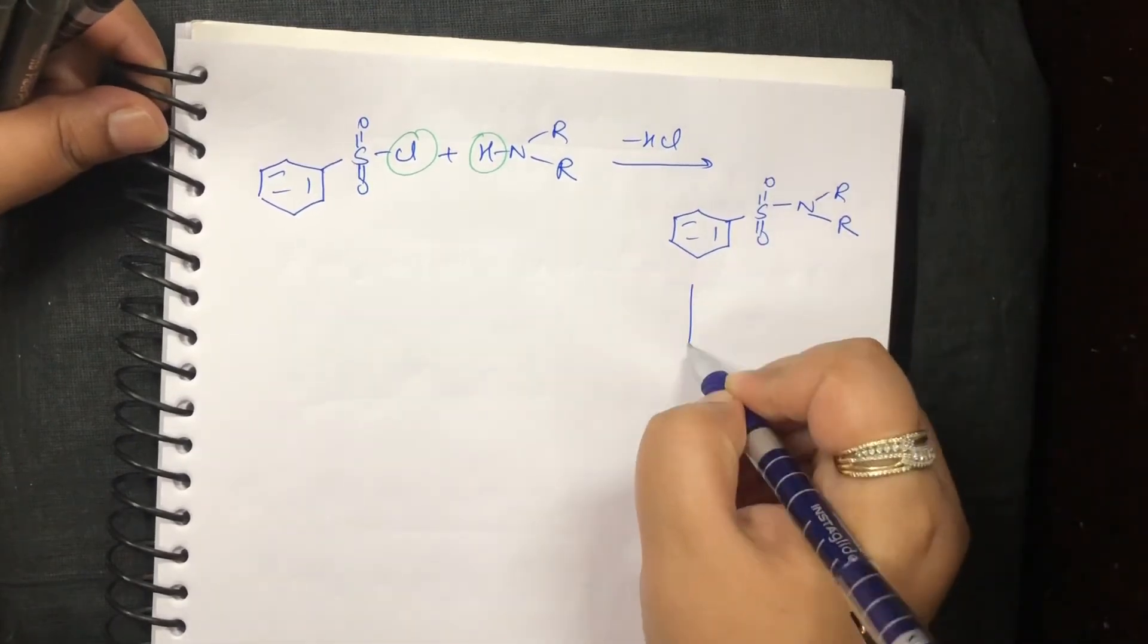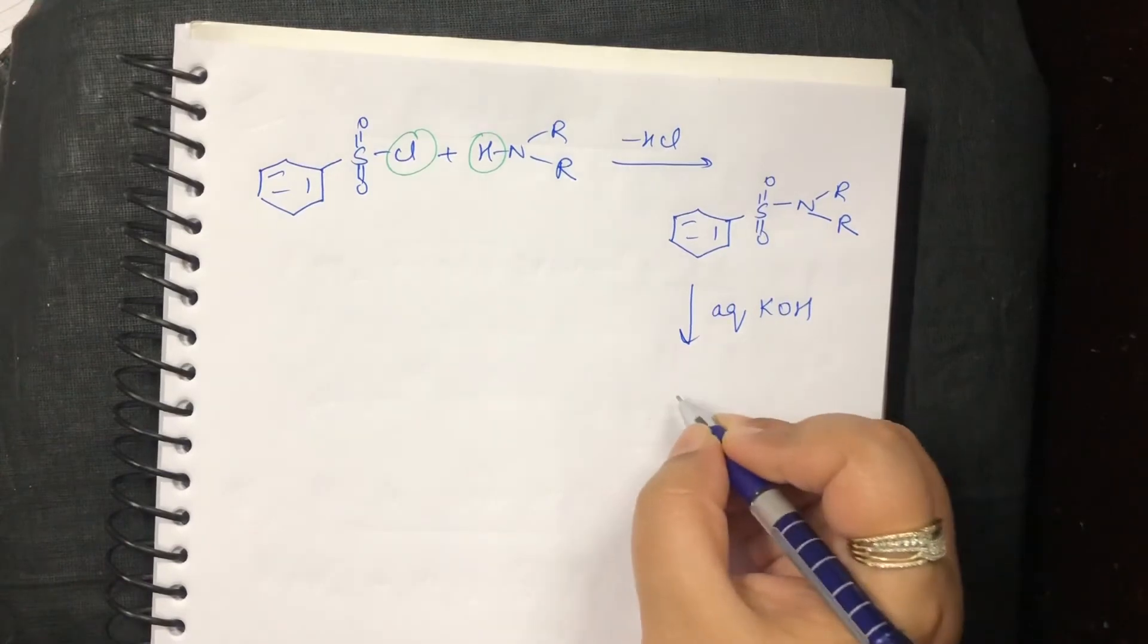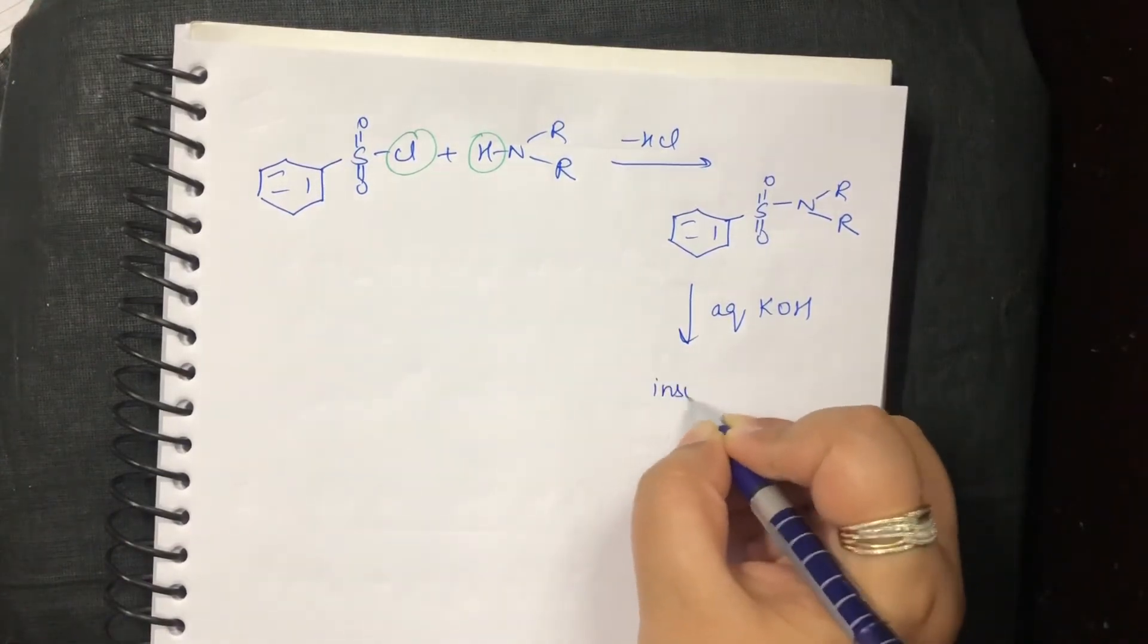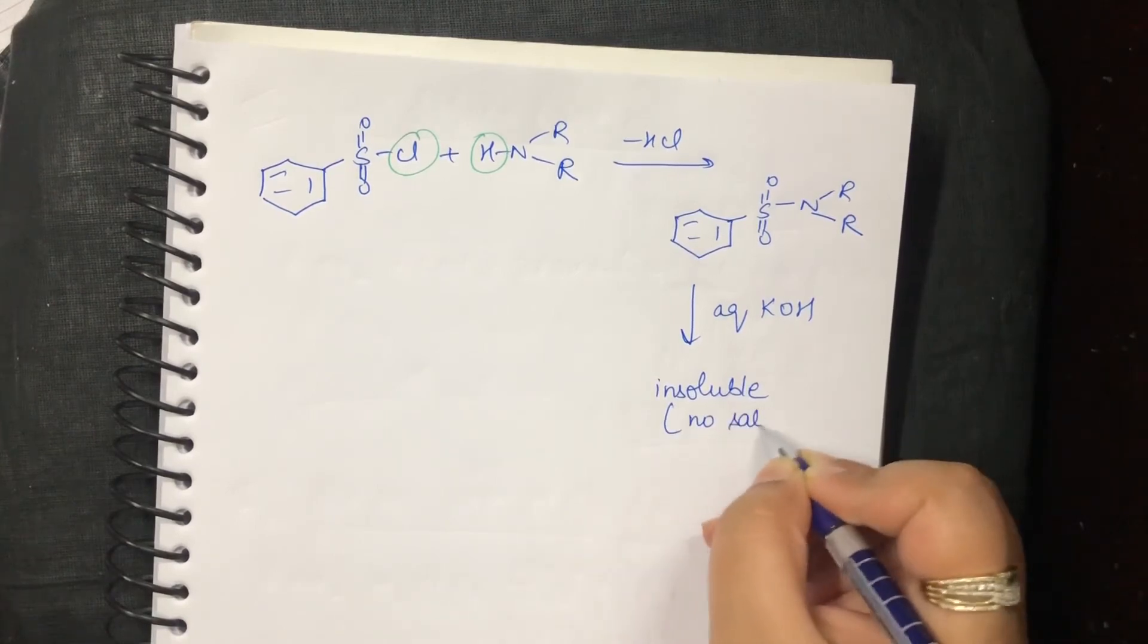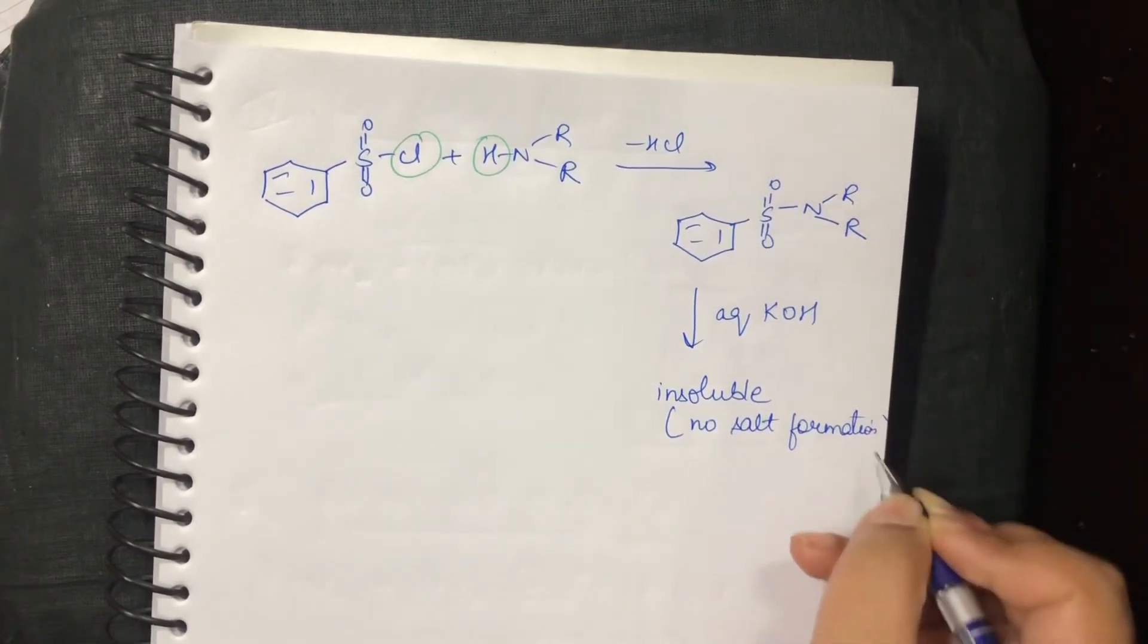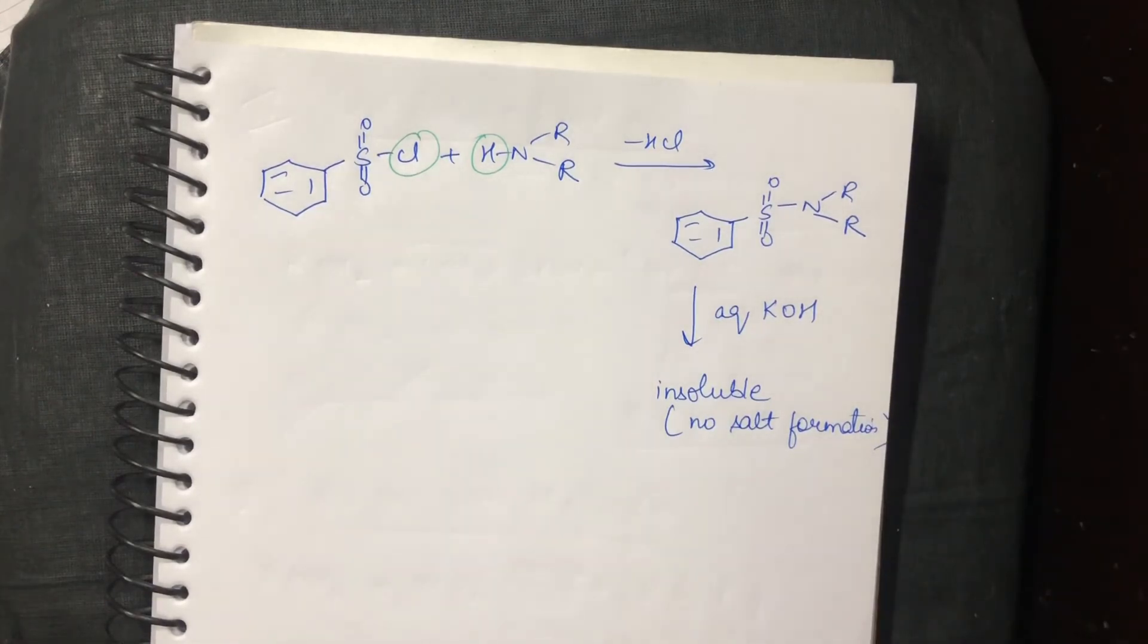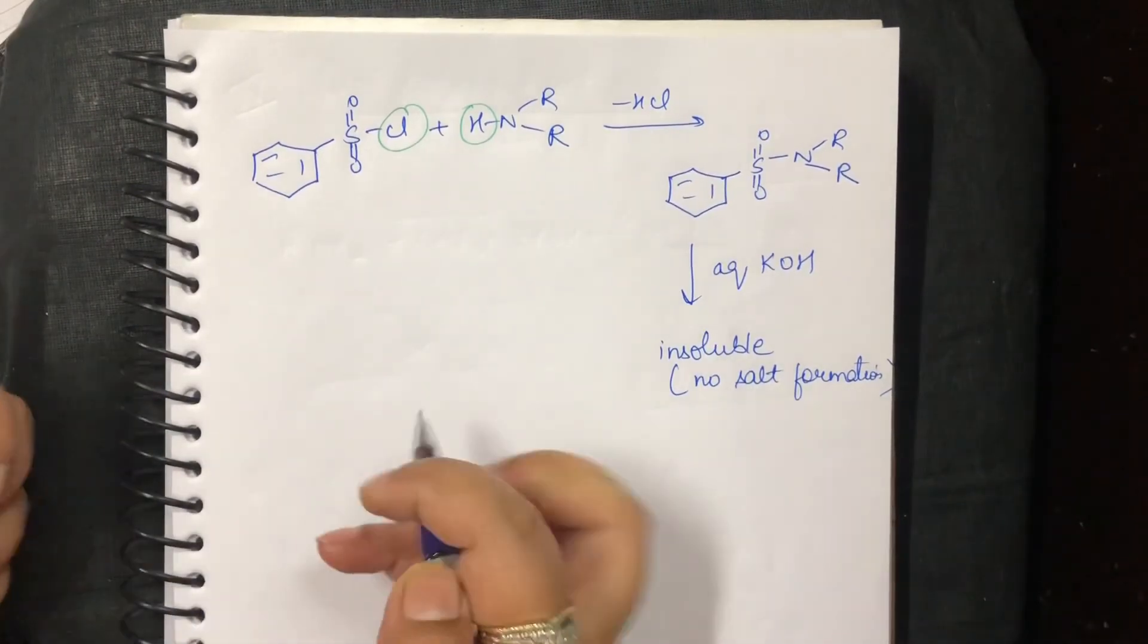Now, you will dissolve it in aqueous KOH but whatever the product is formed, it is insoluble. There is no salt formation here. So, if you get a question to distinguish between the primary and secondary amine, when you will do it with the Hinsberg reagent, the primary product would be soluble and the secondary will be insoluble.